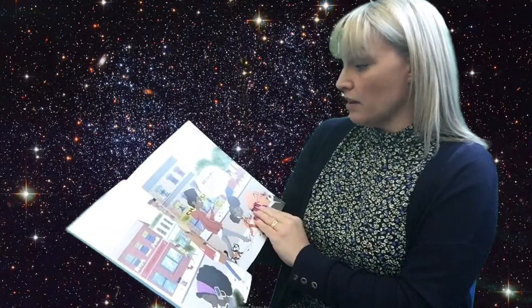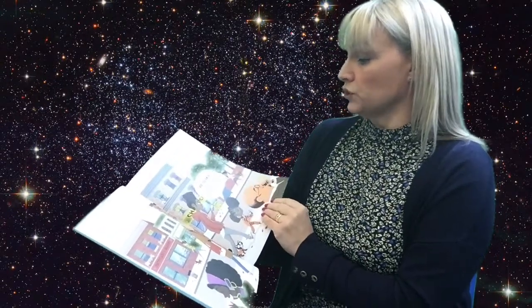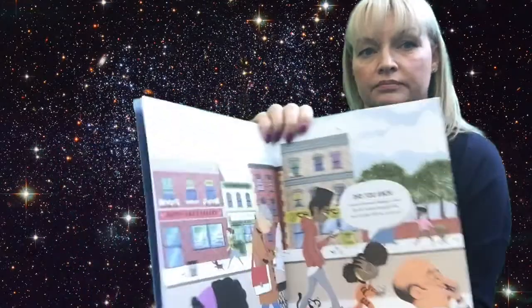Did you know meteor showers happen when the Earth moves through the trail of dust left by a comet? Did you know most meteors are smaller than a grain of sand? Did you know meteors are bits of dust burning up in the atmosphere? Did you know the best time to see a meteor shower is when it's dark and there's no clouds?